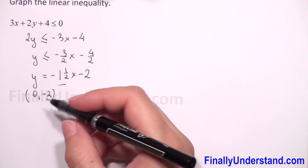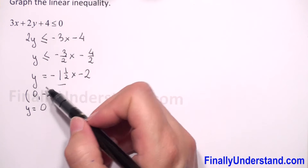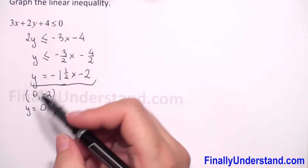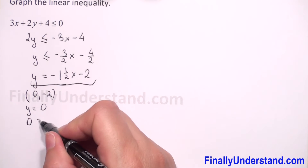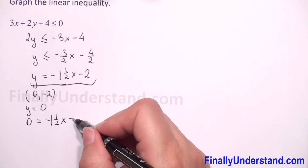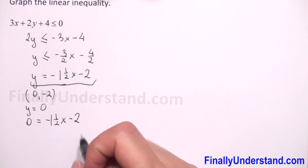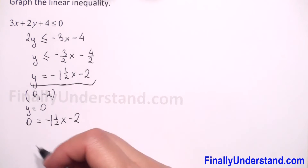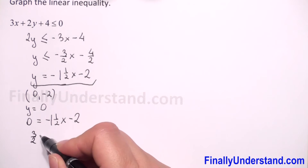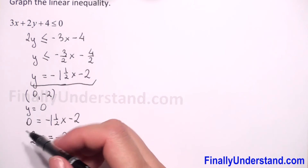For the x-intercept, we will substitute y with 0 in our equation. So we have 0 equals negative 1 and one half x minus 2. I will move negative 1 and one half to the left side, and I will change it to a fraction because it will be easier, so it will be 3 over 2 times x equals negative 2.